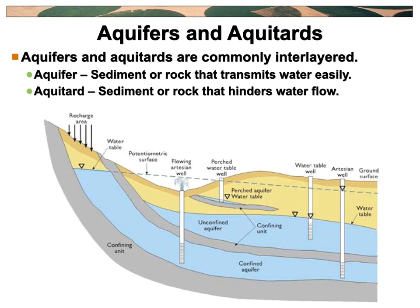There's also a perched aquifer — sometimes you get a small patch of aquitard material that doesn't let water through, and a little pocket of water sits up on top of it. Some folks don't have to drill as deep if they find one of those. Our situation in Columbus is mostly the unconfined aquifer, so anything spilled on the surface is going down into our groundwater.